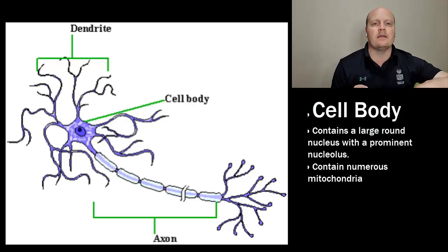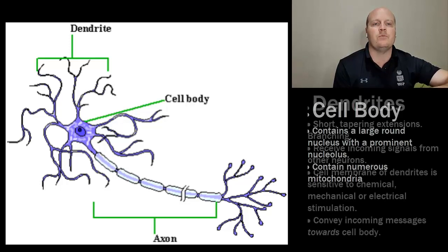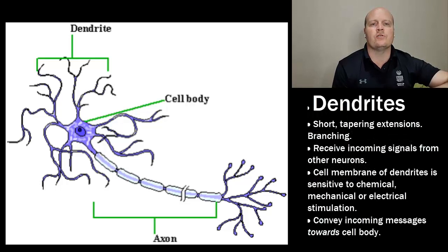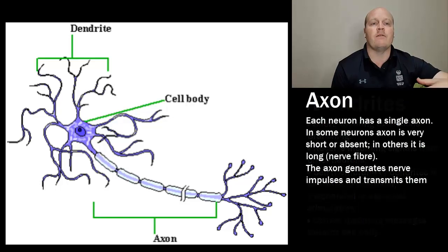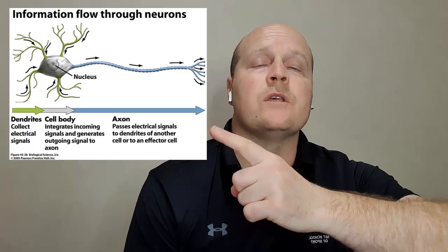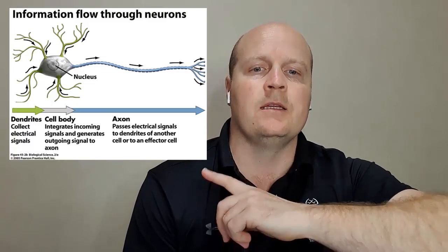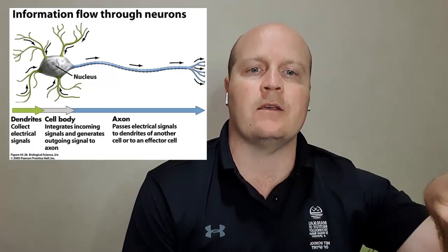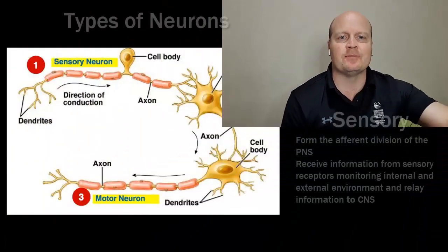Generally, neurons have a cell body, dendrites, and an axon. The cell body has a large nucleus and lots of mitochondria, which are the organelles that create ATP. The dendrites are short tapering extensions and their job is to receive messages. Each neuron has a single axon, which generates nerve impulses and transmits them away. Information only flows in one direction: dendrite, then cell body, then axon.